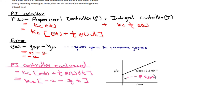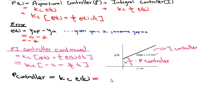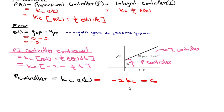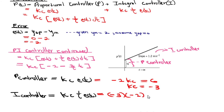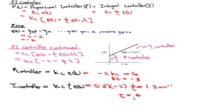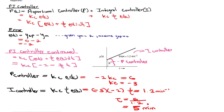Here, ym is the measured value, ysp is the desired set point, and e(t) is the error — the difference between ym and ysp. From the diagram, the initial response equals the P controller, which can be equated to negative 2 kc. The slope at the early response, which is negative 2 kc over the integral time, equals the I controller. Solving these two equations gives kc equals negative 3 and the integral time equals 5 minutes.